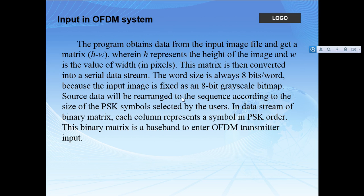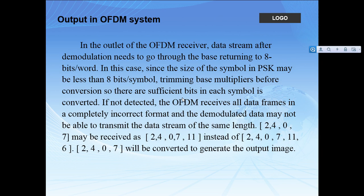The program obtains data from the input image file and gets a matrix with height H and width W. This matrix is then converted to a serial data stream, and the word size is always 8-bit. The input image is fixed as an 8-bit grayscale bitmap. Source data is rearranged into a sequence sized according to the PSK modulation selected by the user.